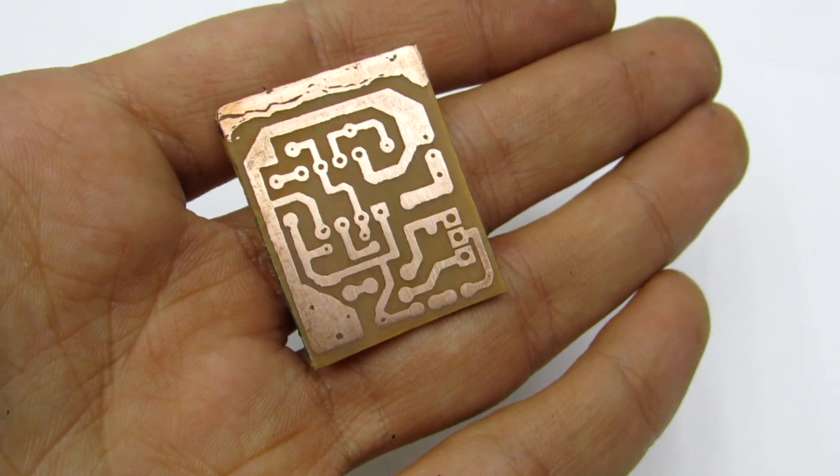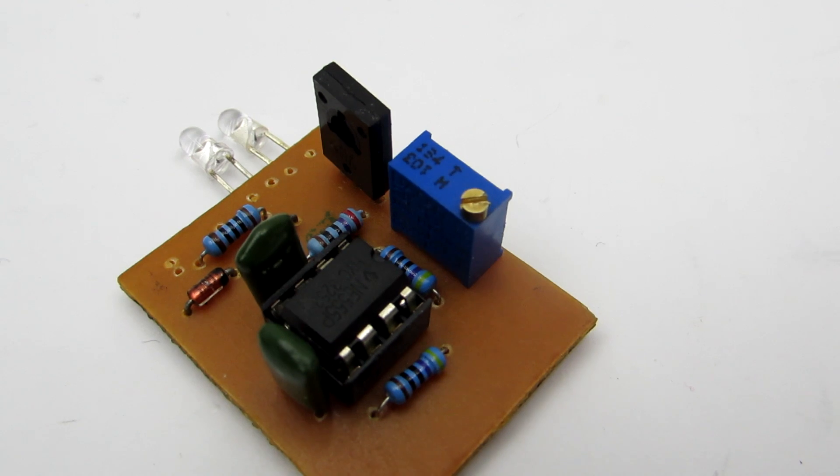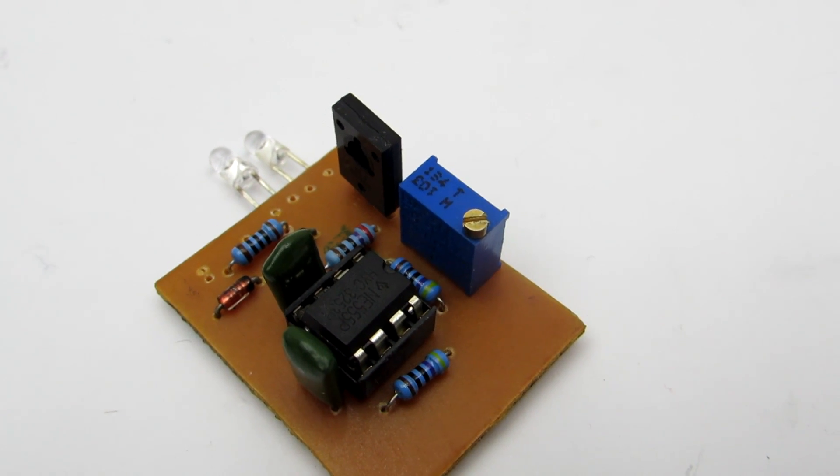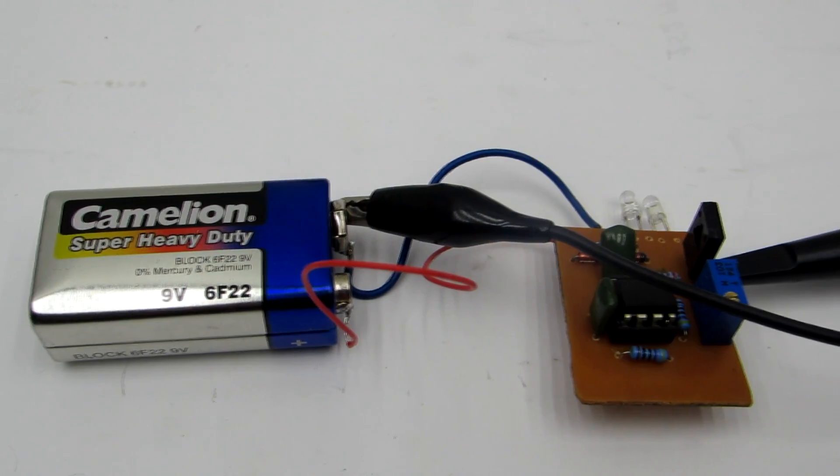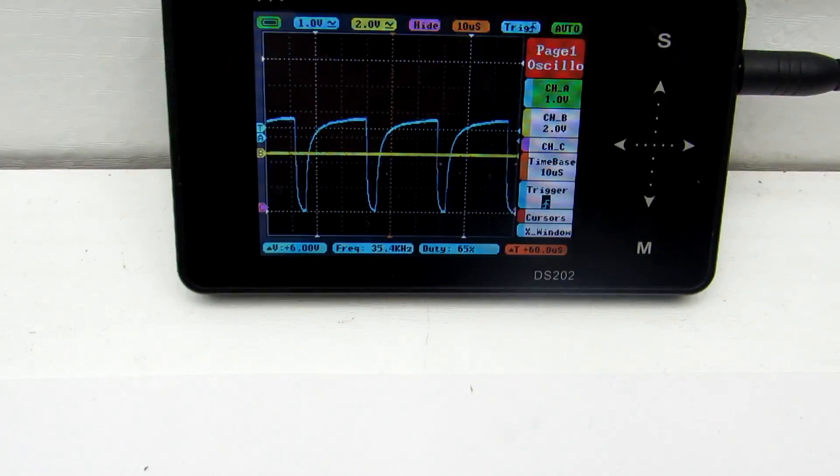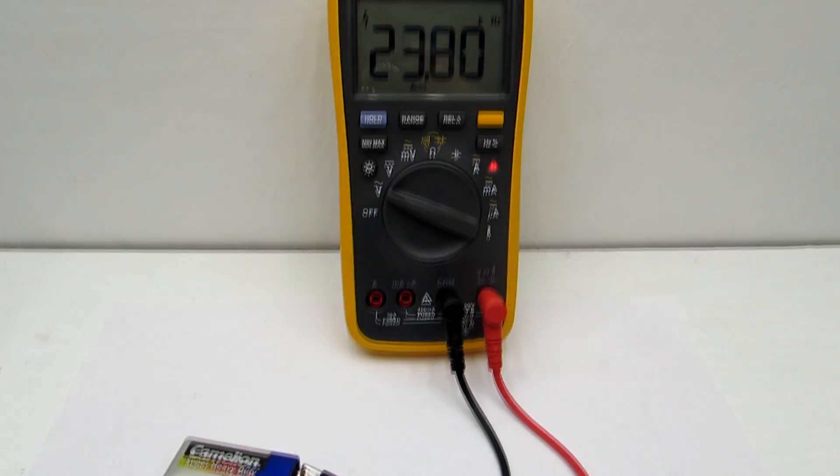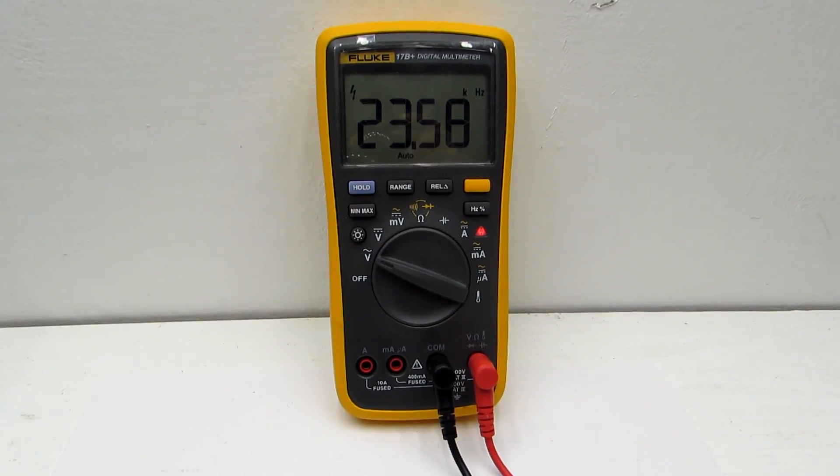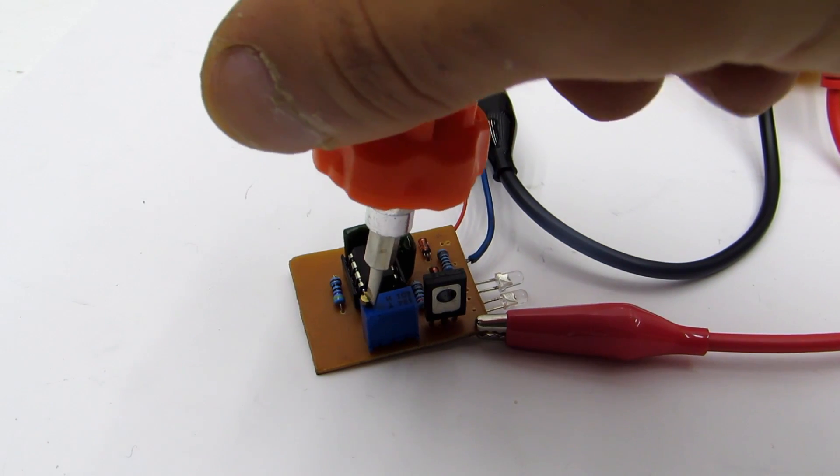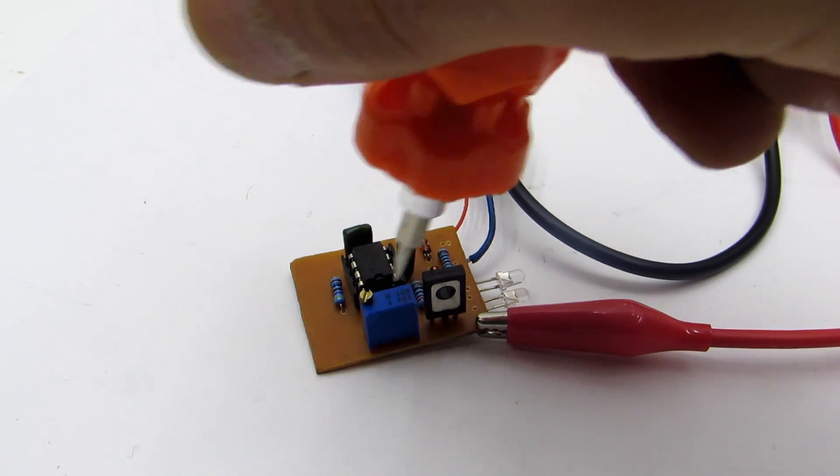The printed circuit board is very compact, and a properly assembled device will work immediately. Before soldering the infrared LEDs, it's advisable to check the generation on the third output of the timer. This can be done with an oscilloscope or multimeter with frequency measurement function. Now rotate the trimmer and achieve a frequency of 35 kHz.